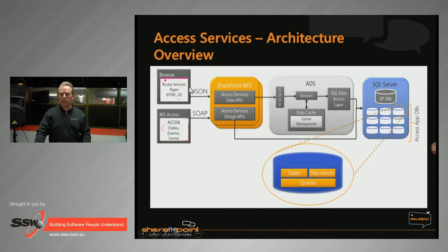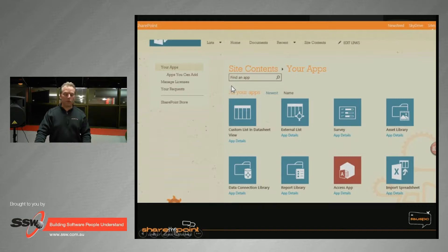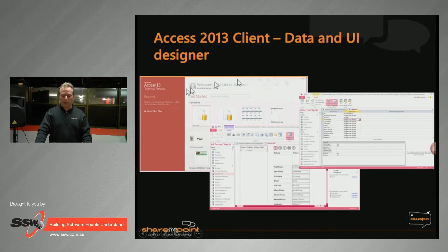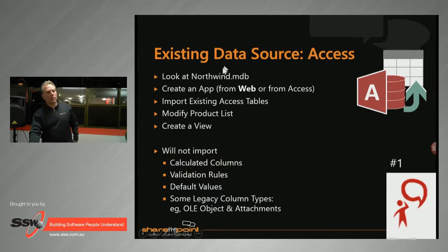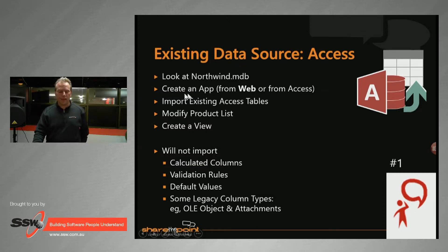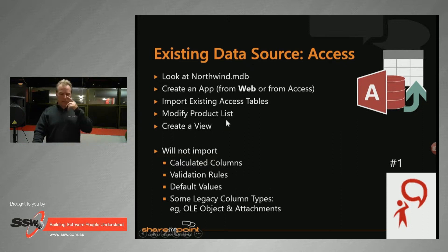The way this works: you have a SharePoint farm, the Access rich client calls the SharePoint APIs which call through to a data layer into SQL Server. The browser calls the same things via JSON. You'll open up SharePoint, type that you want to build an Access app, then start using the familiar Access UI. I'm going to look at a Northwind MDB file, create an app, import some tables, make a UI, and create a view.